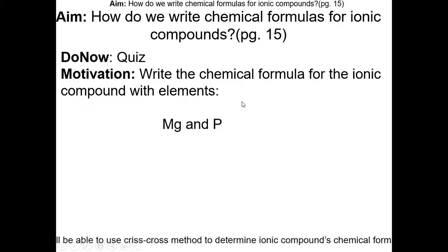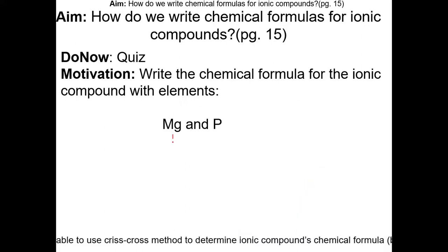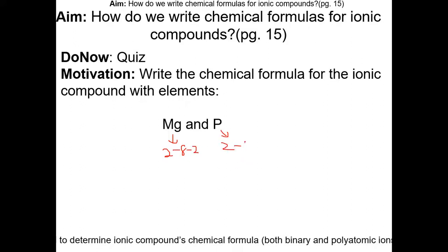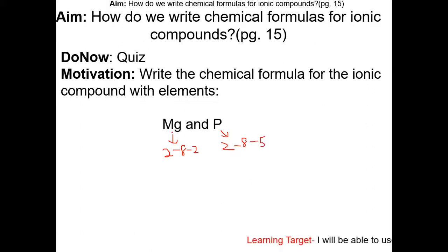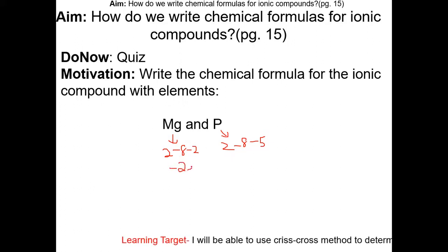First, go to your periodic table and look up the electron configuration of each of these elements. Magnesium is 2-8-2. Phosphorus is 2-8-5. Since magnesium is a metal, it is going to lose electrons. Following the octet rule, it is going to lose two electrons for magnesium to achieve the noble gas configuration.